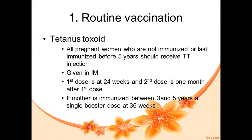Tetanus toxoid is given as an IM injection. The first dose of TT is usually at 24 to 27 weeks of gestation, and the second dose is one month after the first dose. If the mother was immunized between three to five years ago, a single booster dose at 36 weeks of gestation can be given.